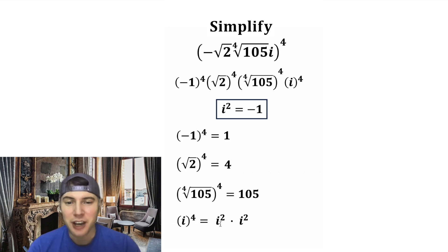Then i to the fourth would be equal to i squared times i squared. And as we talked about earlier, i squared is equal to negative one. So both of these are negative ones. And negative one times negative one is equal to one.